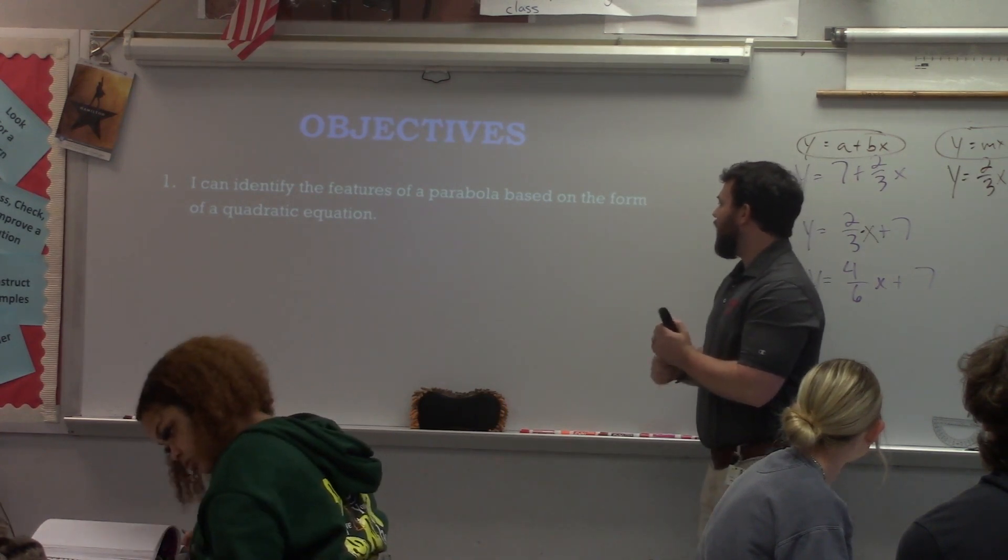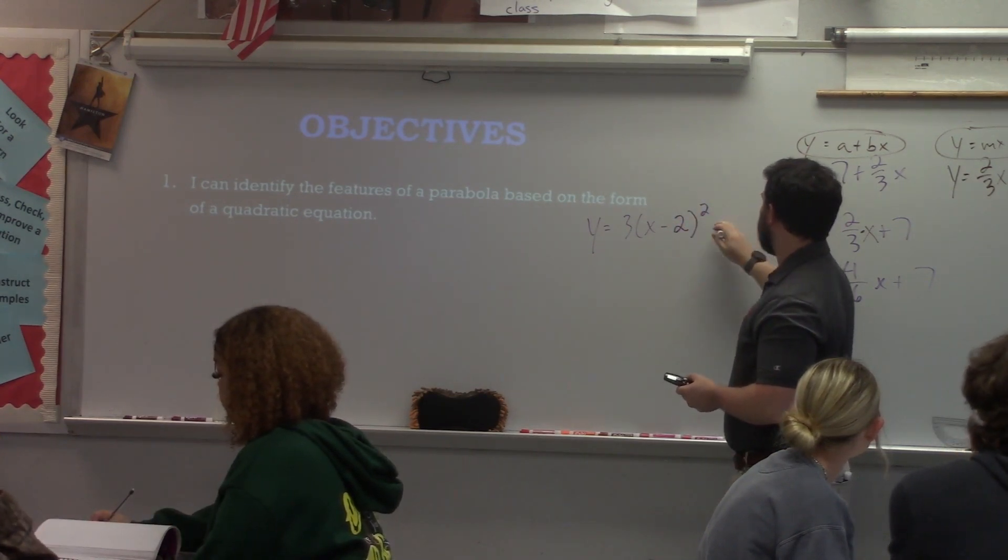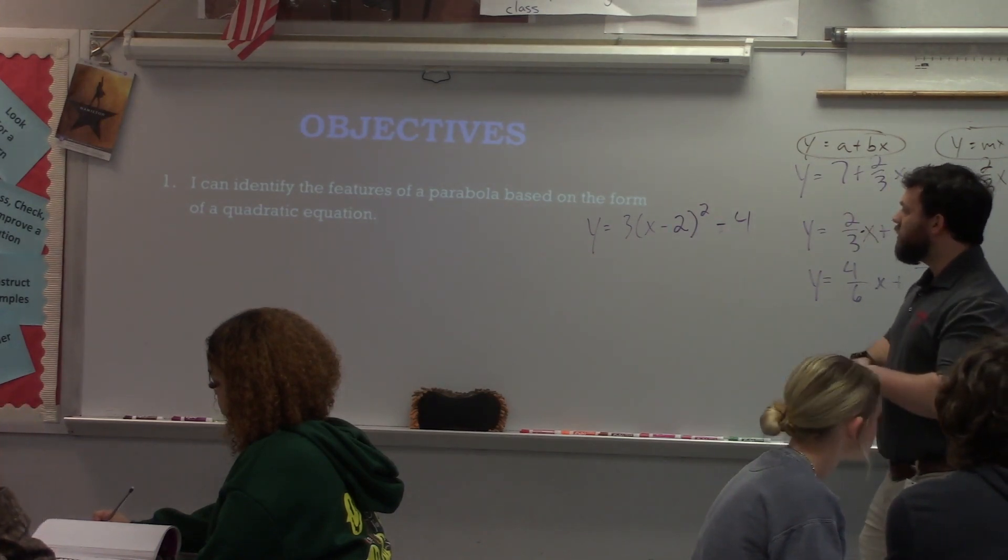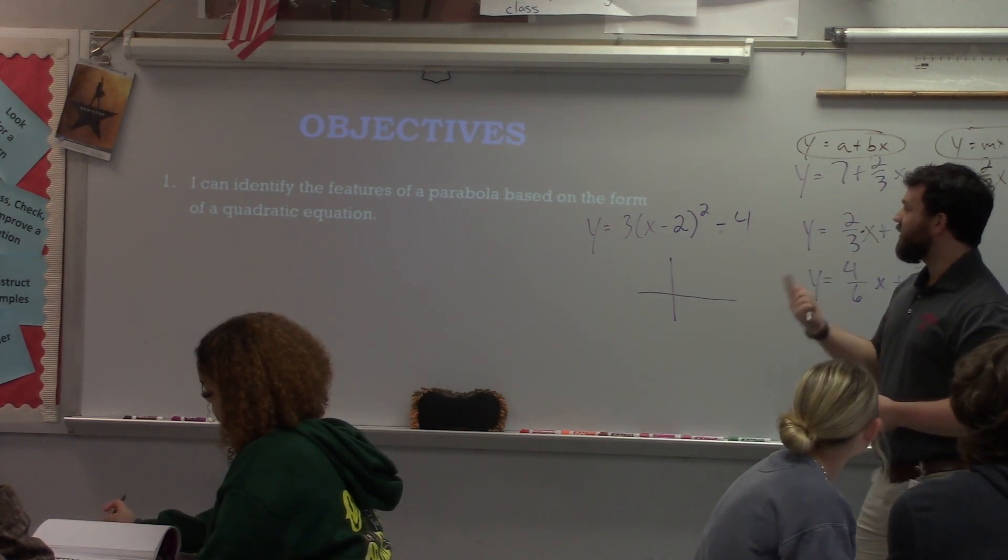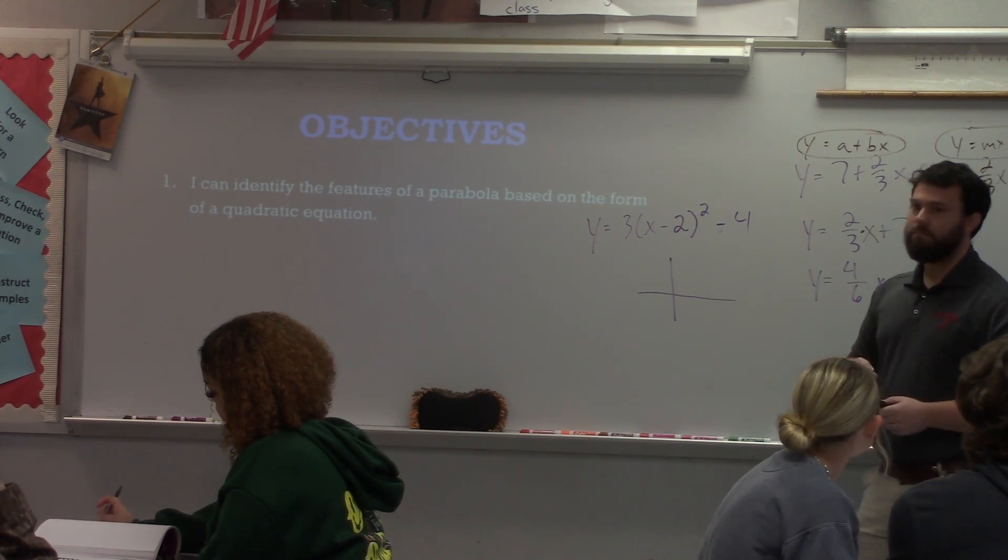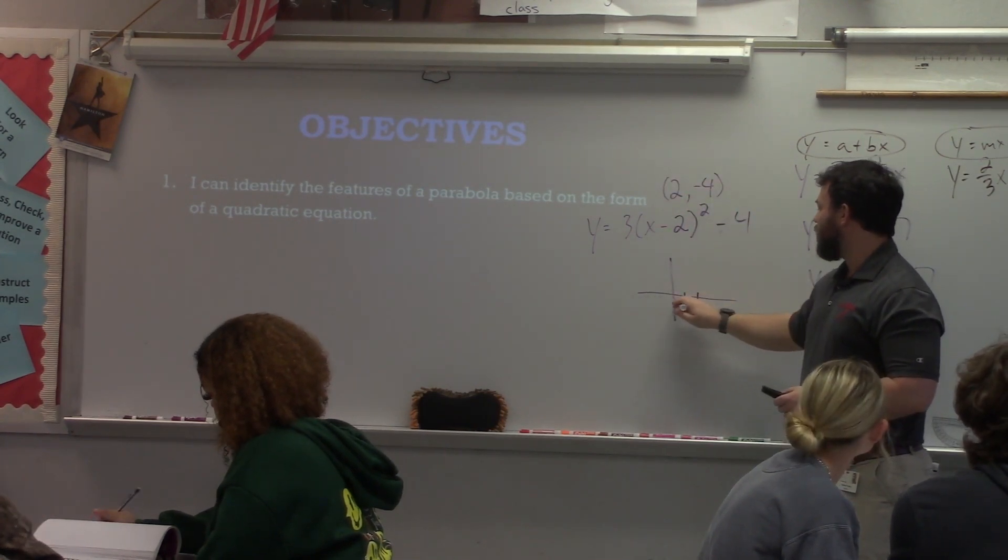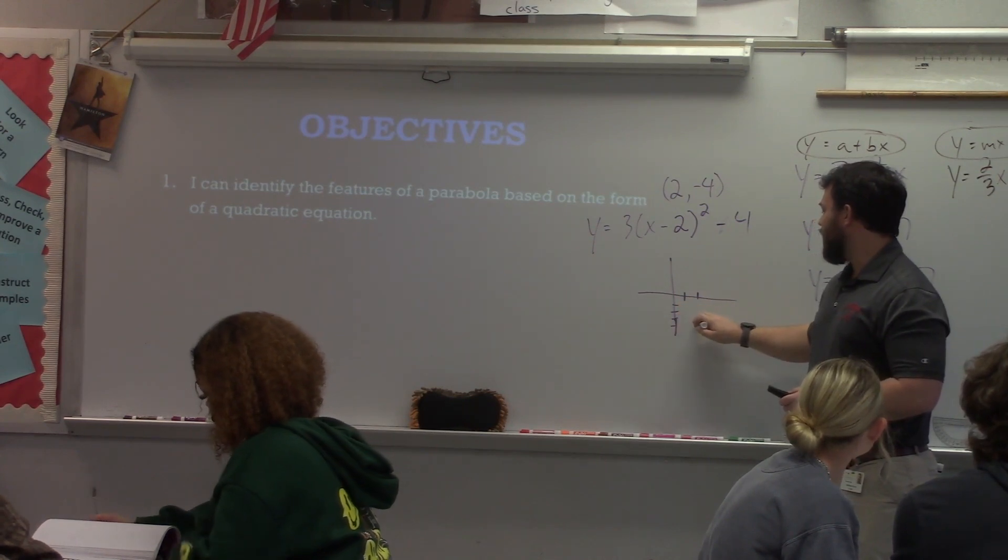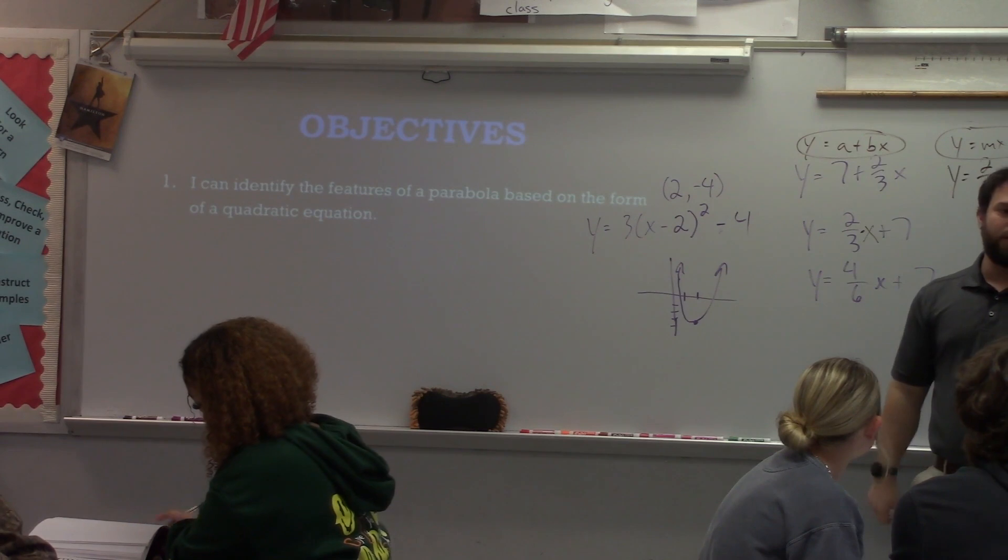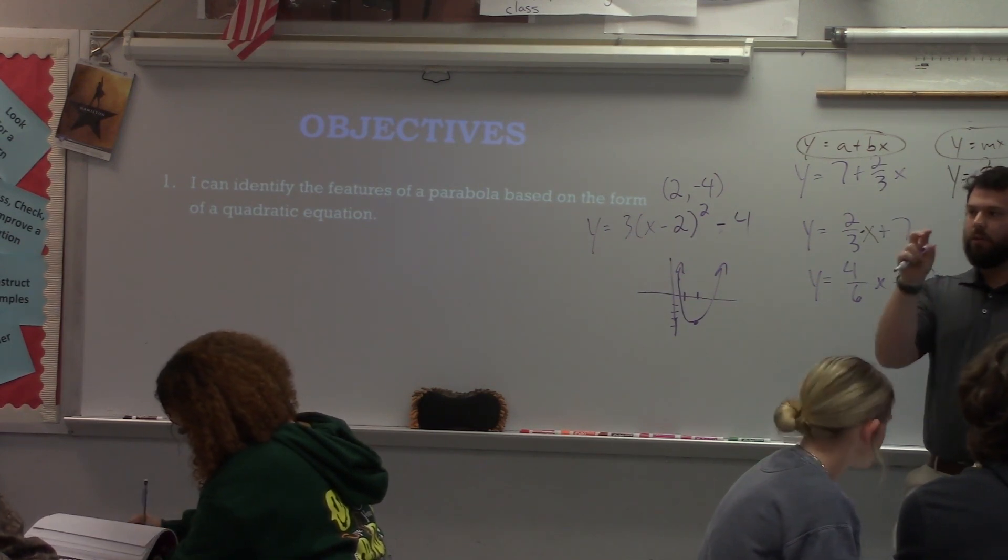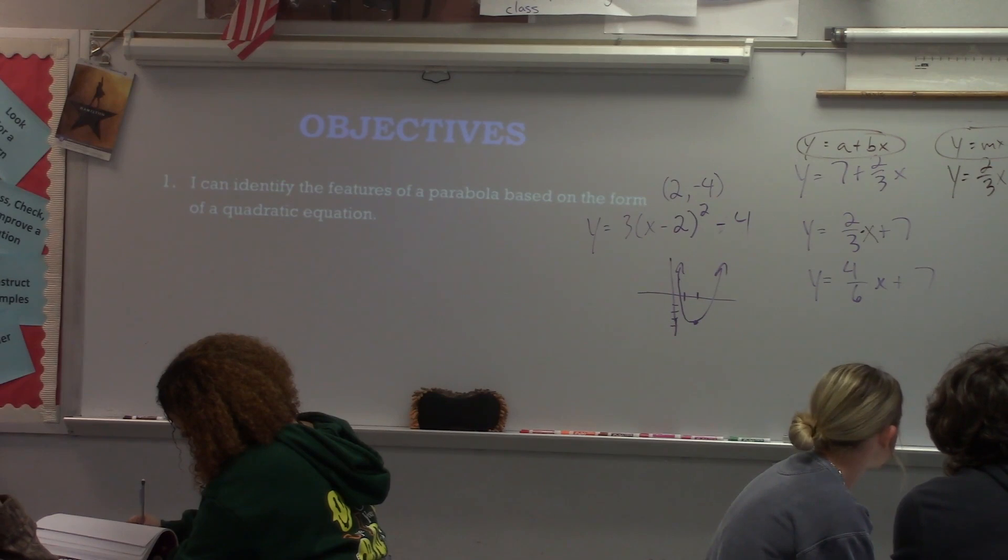If you know your features, you can actually picture roughly what that parabola would look like without even picking up a graph and calculating. When I look at this equation, I know what two key features: vertex, line of symmetry, and also concavity. What would my vertex be? H would be a positive 2. K would be a negative 4. So I know it looks roughly like this. And then the parabola is concave up. That's not exact, but that's a pretty decent sketch of what it looks like, and I can picture it right away.